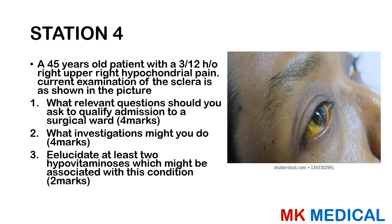Station 4: A 45-year-old patient with a 3-month history of right hypochondrial pain. Examination of the sclera is shown in the picture. What relevant questions should you ask to qualify admission to a surgical ward? What investigations might you do? Elucidate at least two hypovitaminoses associated with this condition. This question is very similar to the Ultimate Bazooka — if you haven't read it, I highly recommend it.